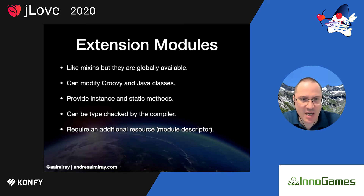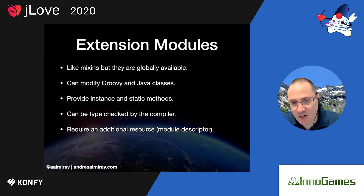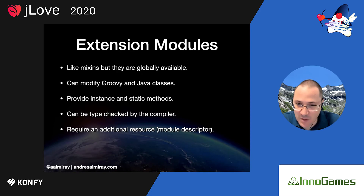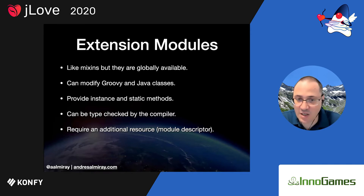The final feature for Groovy runtime before we move to compile time is extension modules. They work like mixins in the sense that they provide additional methods or properties, but they are always globally available. You can modify Groovy and Java classes as we've seen. You can provide instance and static methods. They can be type-checked by the compiler — and Groovy is both dynamically typed and statically typed. You can have it type-checked and run it dynamically at runtime, or compile it statically and turn warnings into actual compiler errors.